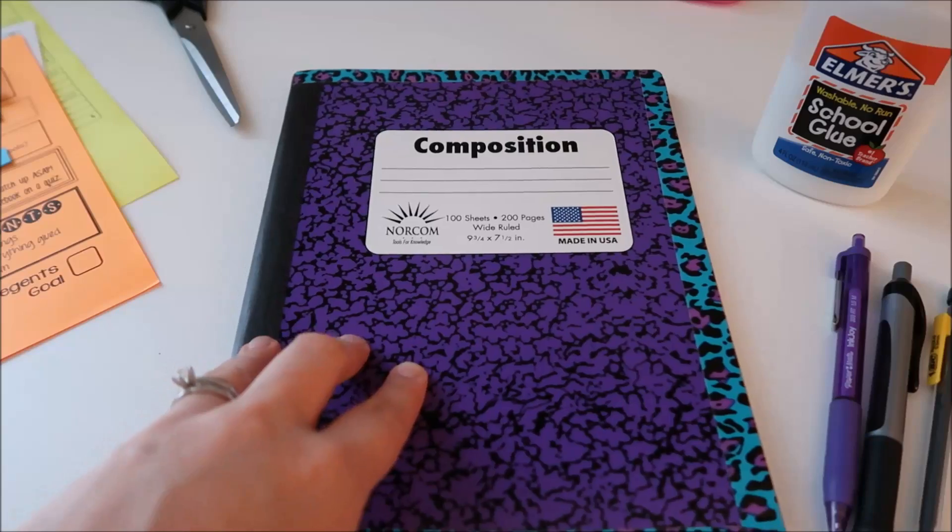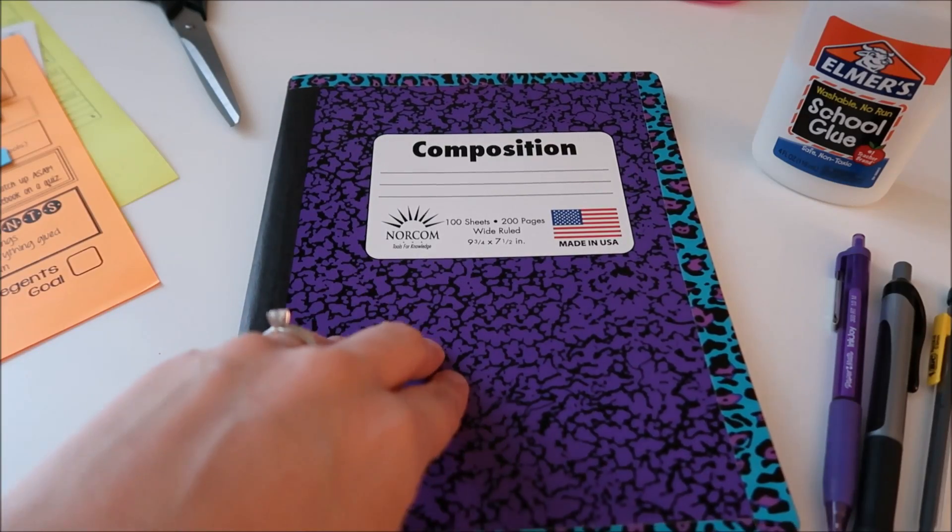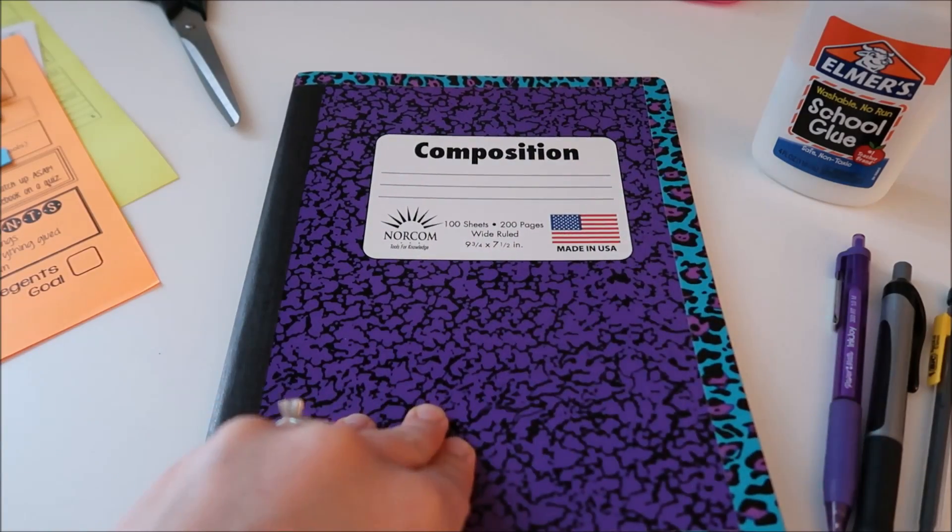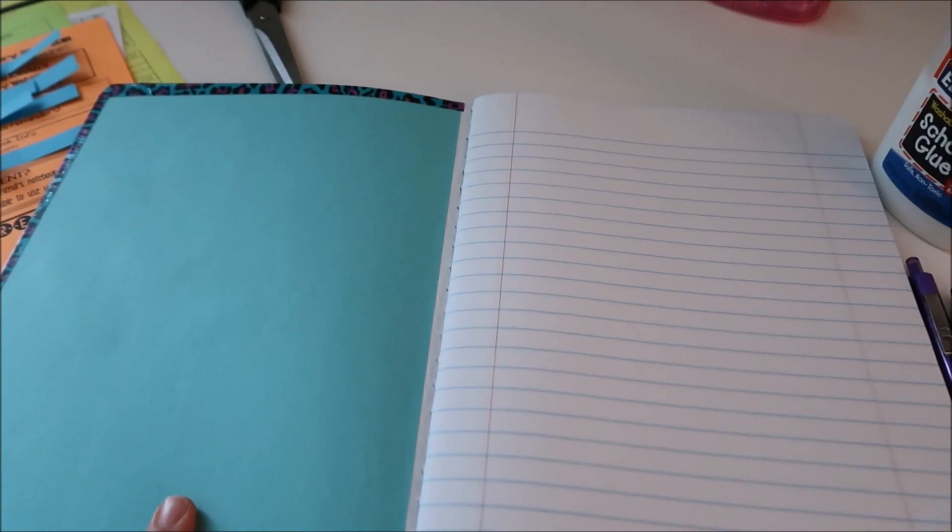I'm going to do my label after I do the video because that's something I can just do quick. What I've done so far off camera was I put paper down on the inside cover so I have paper here and then I have paper back here.